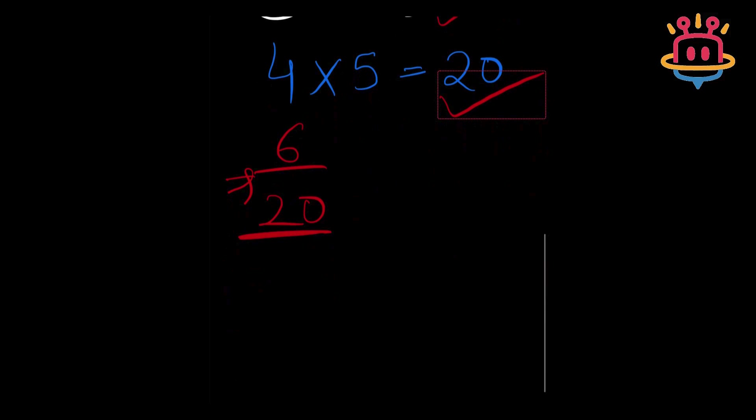We always want to reduce fractions to their simpler forms. So can we reduce 6 by 20 into a more simpler form? I think yes we can. So simpler form will be 3 by 10. Yes, you all guessed it right.